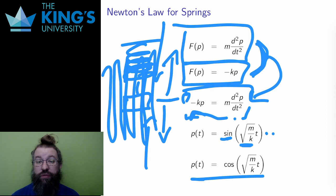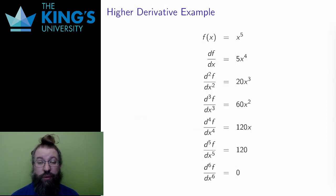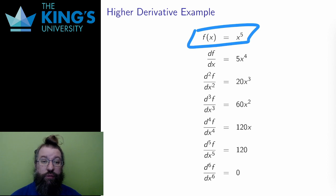Finally, let me finish this video with one higher derivative example. Let me take a polynomial, say x to the 5. Here are its derivatives, each one using the power rule. For the first, the 5 comes down, and the new exponent is 1 less, to give 5x to the 4.